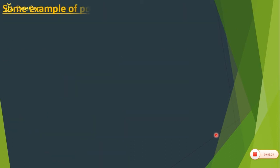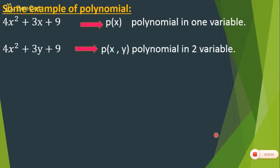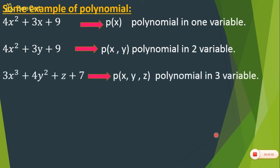Now let's see how polynomials are represented. If a polynomial has only one variable — for example, 4x squared plus 3x plus 9 — it is written as p(x), called a polynomial in one variable. If there are two variables, it is written as p(x, y) — polynomial in two variables. If there are three variables x, y, and z, it is written as p(x, y, z) — polynomial in three variables.